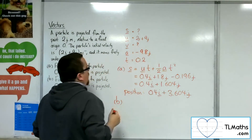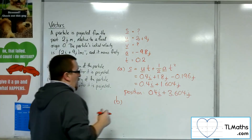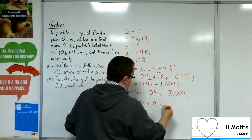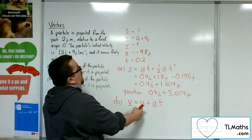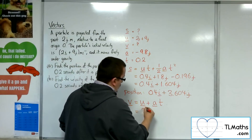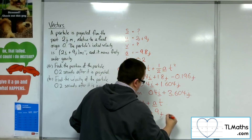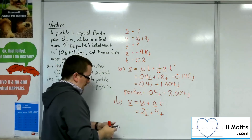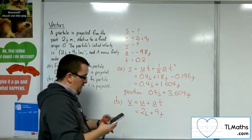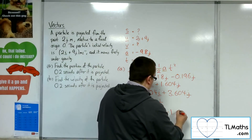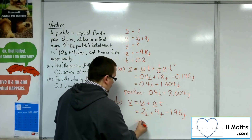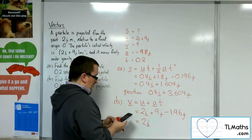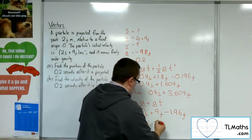Now what about the velocity? The velocity: v equals u plus at. So we've got the initial velocity 2i plus 9j, plus minus 9.8j times t. So minus 9.8 times 0.2 is minus 1.96j. So we'll have 2i, and then 9 take away 1.96 gives 7.04j.